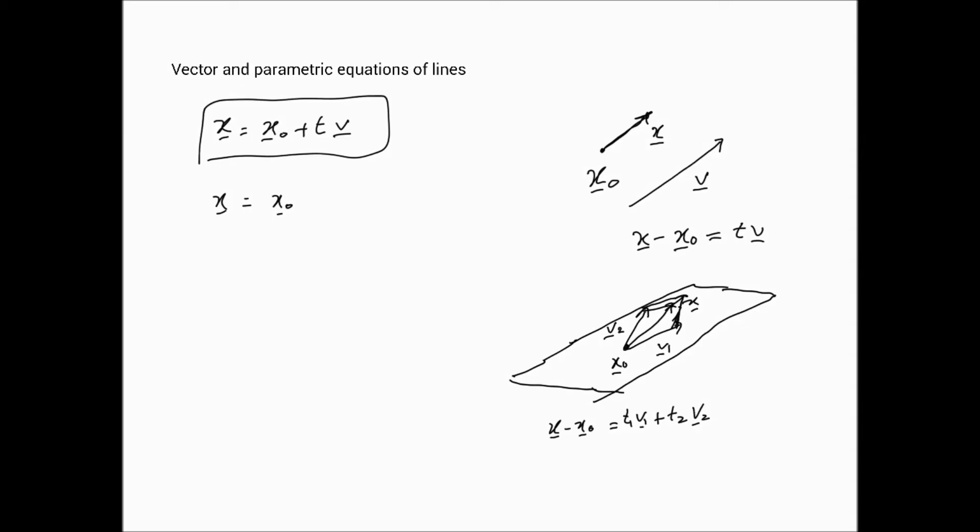We see that the equation of the plane is x equals x0 plus t1 times v1 plus t2 times v2. That gives us the equation of a plane containing the point x0 and parallel to the non-collinear vectors v1, v2.